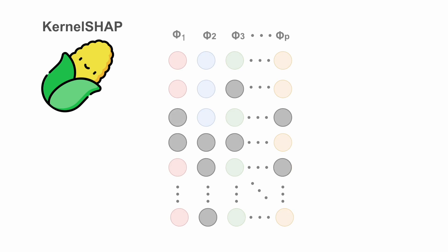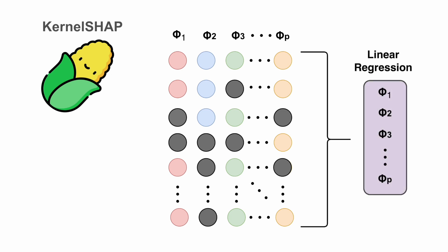The second limitation comes from how SHAP values are calculated. Feature dependencies are when two or more model features are correlated or associated — that is, the value of one feature depends on the value of another. SHAP is impacted by feature dependencies in two ways. The first comes from how SHAP values are approximated. Take Kernel SHAP: this method works by permutating feature values and making predictions on those permutations. Once we have enough permutations, the Shapley values are estimated using linear regression. The problem is when permutating features we assume they are independent — and this assumption is not always true.